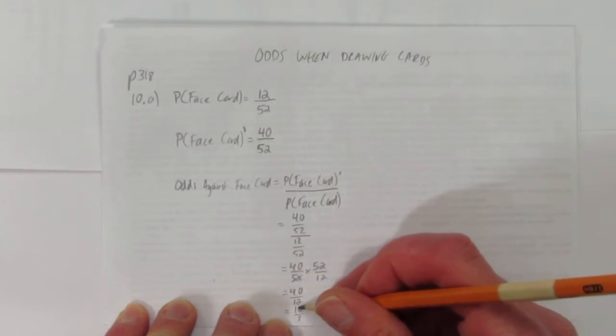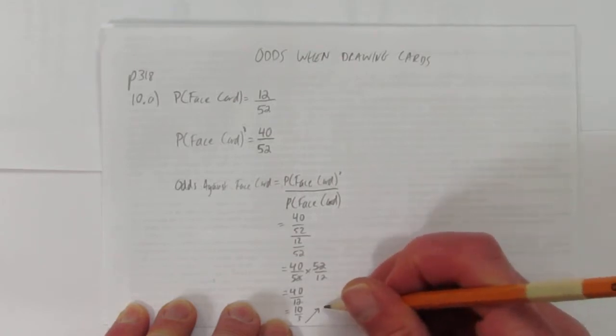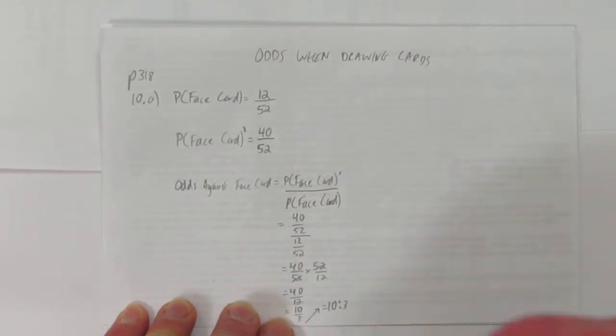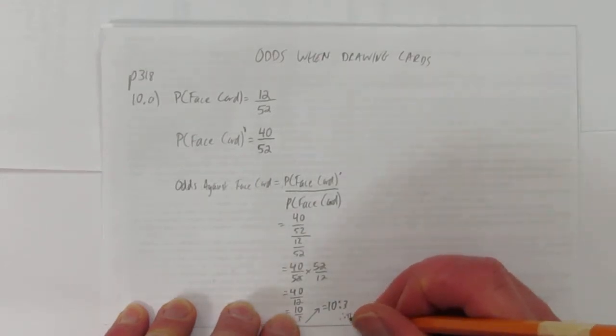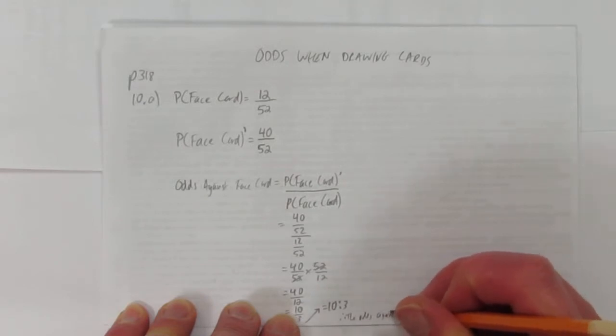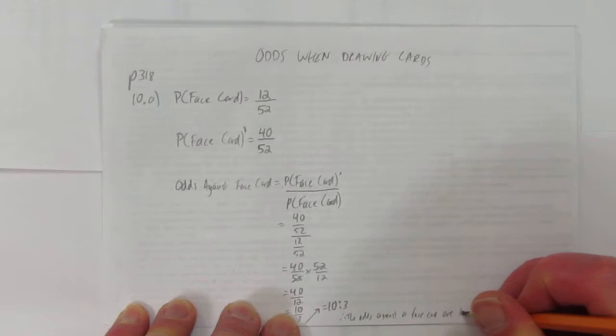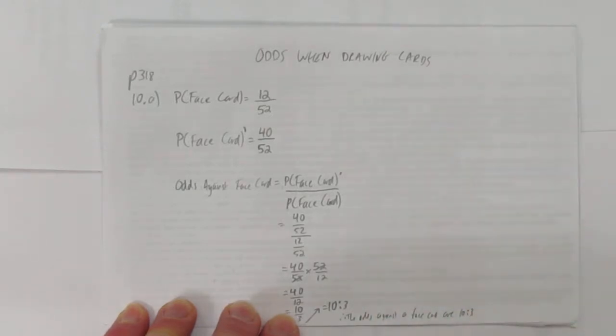Remember odds are not a number, they're one number to another, so you can leave it as 10 over 3, or write it as a ratio, 10 to 3. That is, let's put a word answer since this is a word problem, therefore, the odds against a face card are 10 to 3. This tells us the odds against drawing a face card, it's 10 to 3 against. Question B says, what are the odds against drawing two face cards?